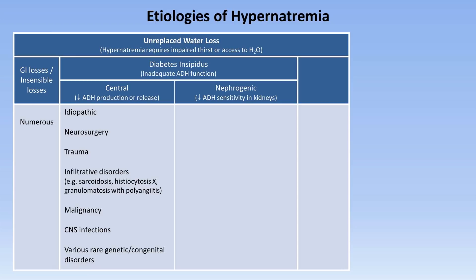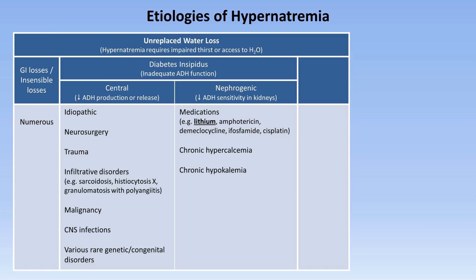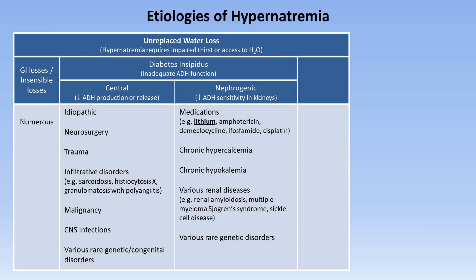There are an equal number of causes of nephrogenic DI. Medications, particularly lithium, are among the most common. Both chronic hypercalcemia and hyperkalemia can do it. A variety of otherwise seemingly unrelated systemic diseases with renal manifestations are included here as well. There is a relatively unique mechanism that occurs in pregnancy, in which an enzyme produced by the placenta increases the metabolism of ADH — sometimes considered a form of nephrogenic DI, and sometimes considered a separate type called gestational DI.